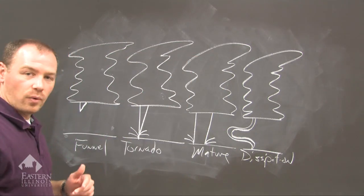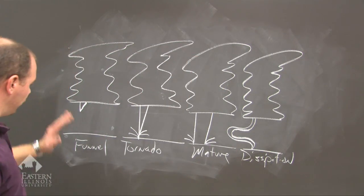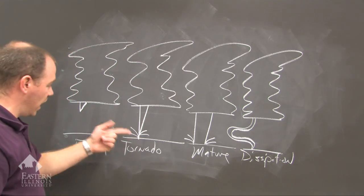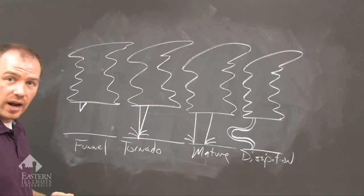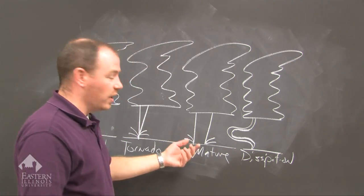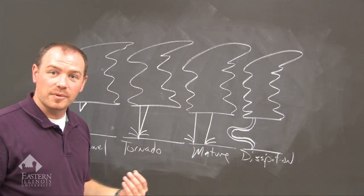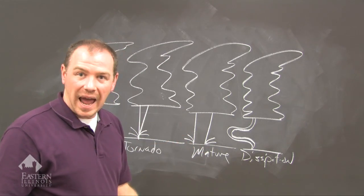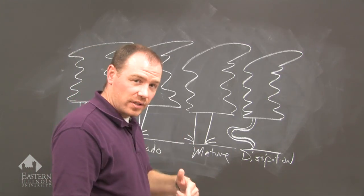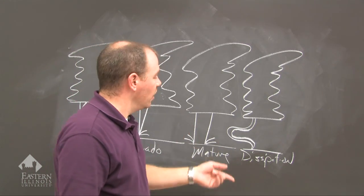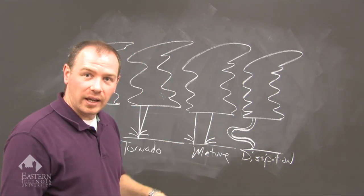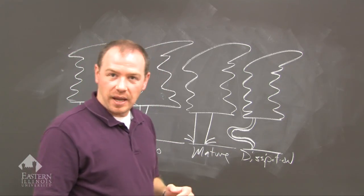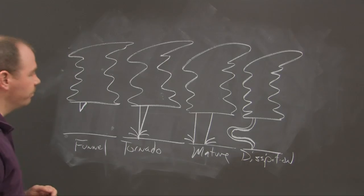So we get the four stages of tornado development. We have the funnel stage, the tornado stage when the funnel actually touches the ground, the mature stage when the tornado widens and becomes more destructive, and then when it loses its axis the updraft becomes more rope-like, wobbling around — that is the dissipation stage, the end of the tornado.